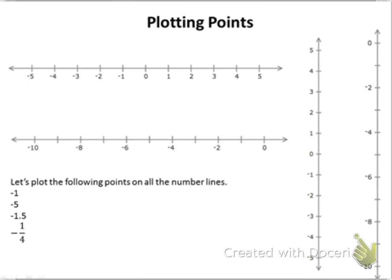Let's plot the following points on all the number lines. The first point is negative 1. I'm going to start with our first one up here. I can see that the 0 is in the middle, and it actually says negative 1 on there for me. I'm going to put the dot right where the two lines cross — you don't want to put it above or below. You need to put it right where the two lines cross, like that one.